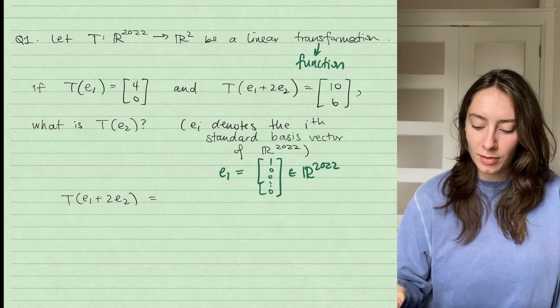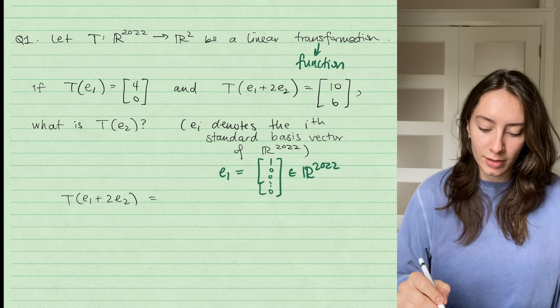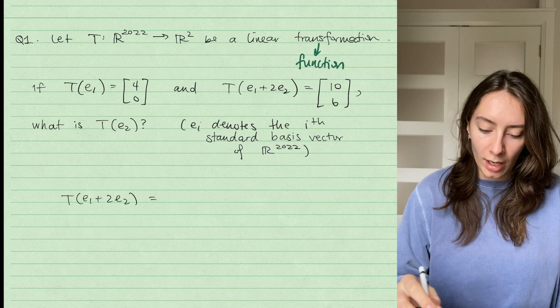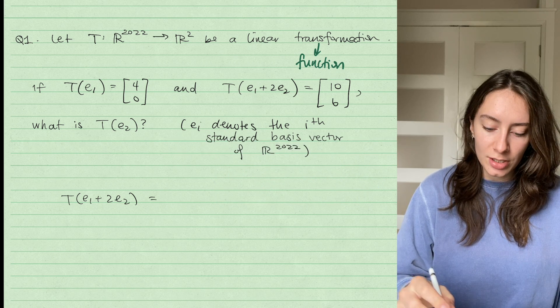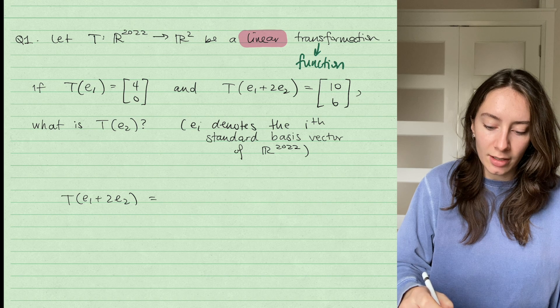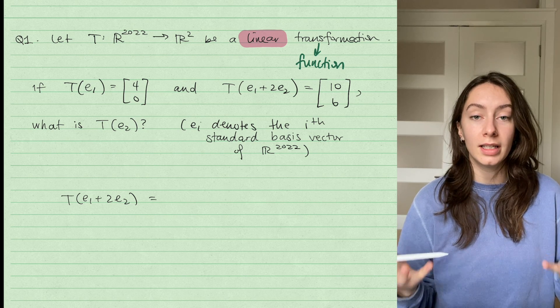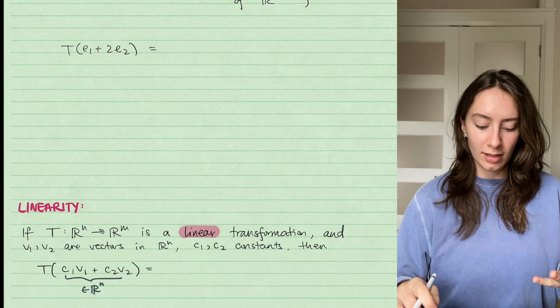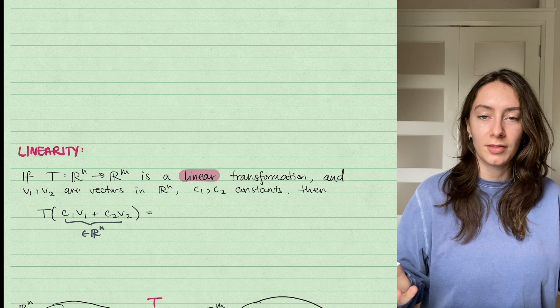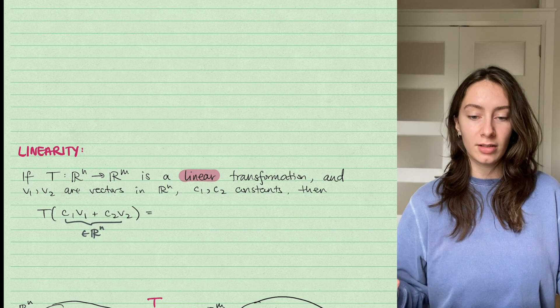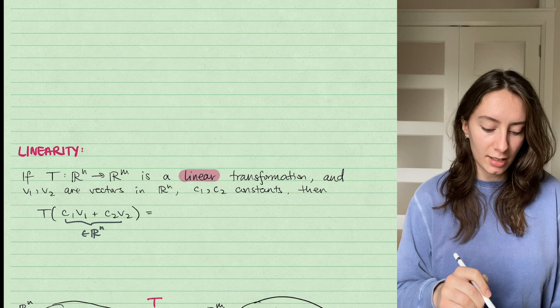So we have some information about our linear transformation, and a really important piece of information is the fact that it's linear. So what does linear mean? Why do we care? So linearity, we often call the property of when something's linear, we say it satisfies the property of linearity.